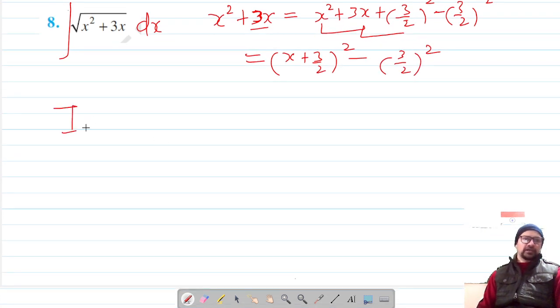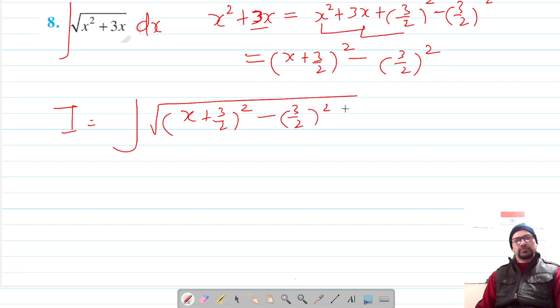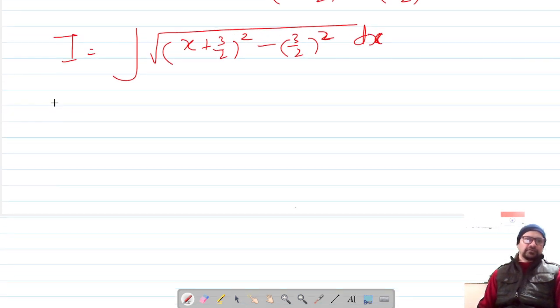Now our integral is integration of root of x plus 3 by 2 the whole square minus 3 by 2 the whole square with differential dx. This is now of the form integration of root of x square minus a square.